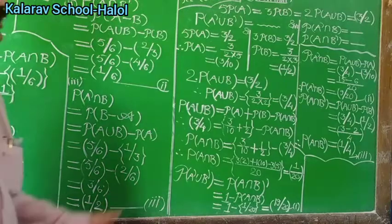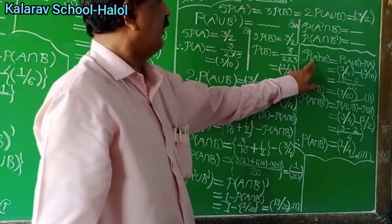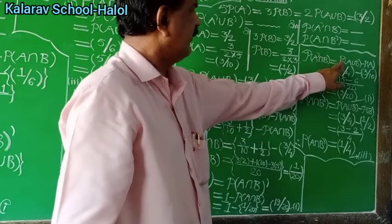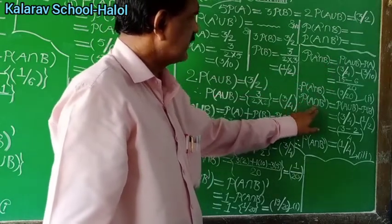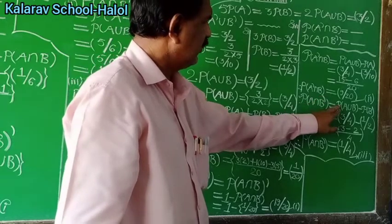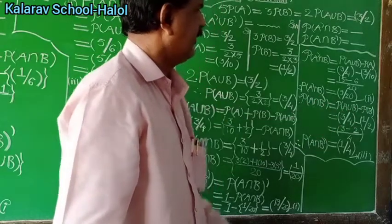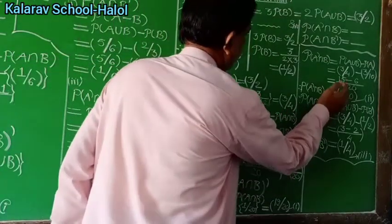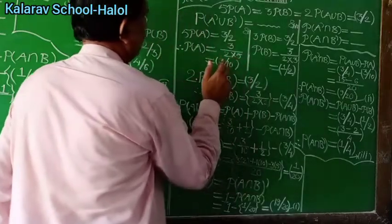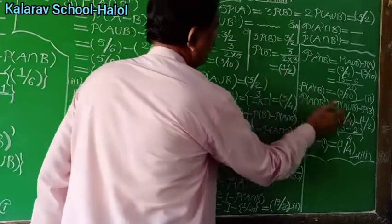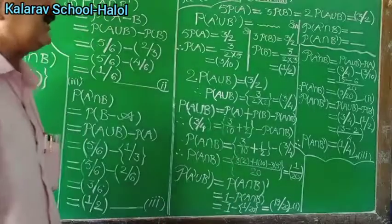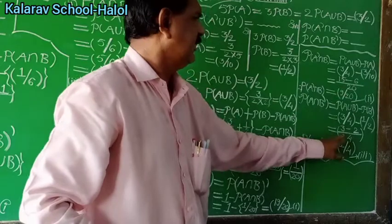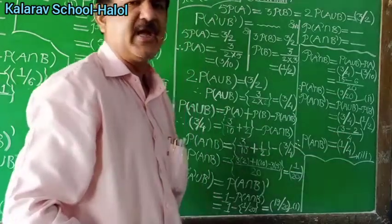For the remaining required probabilities: P(A complement intersection B) equals P(A union B) minus P(A) = 3/4 minus 3/10. Taking LCM as 20: 15/20 minus 6/20 = 9/20. And P(A intersection B complement) equals P(A union B) minus P(B) = 3/4 minus 1/2 = 1/4. These are answers 2 and 3.